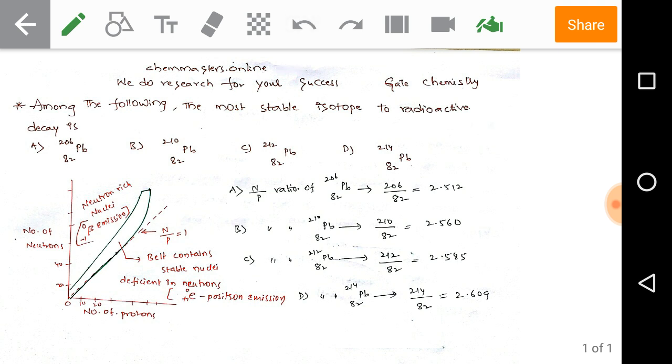Observe the given options: A is plumbum with 82, 206; B is 82, 210; C is 82, 212; and option D is 82, 214. Before analyzing the most stable isotope to radioactive decay, we need to check the stability belt.